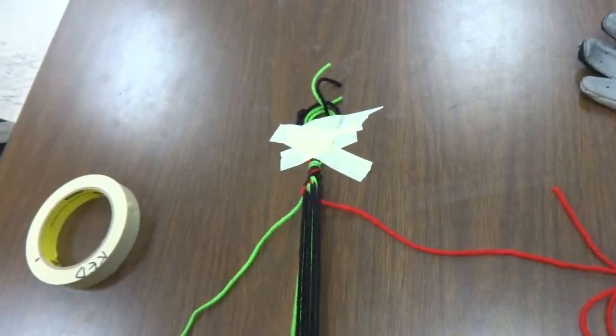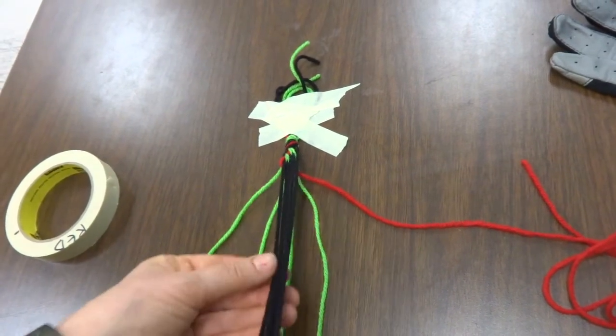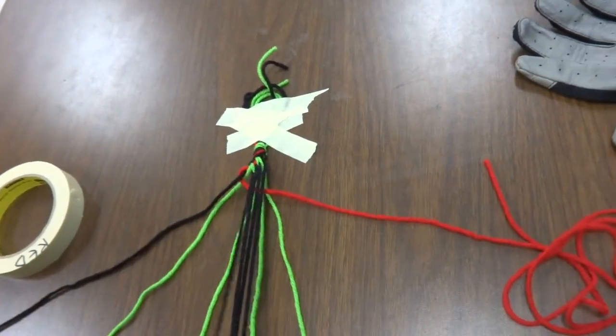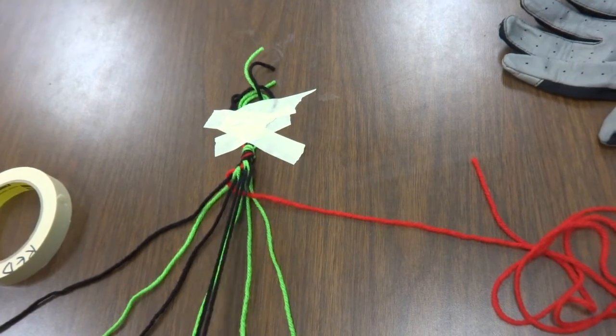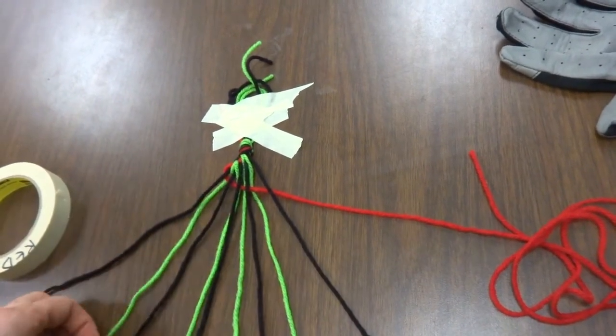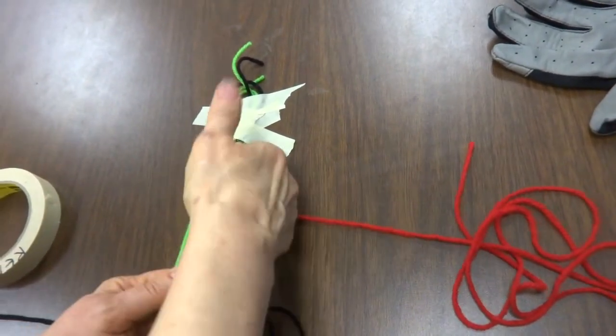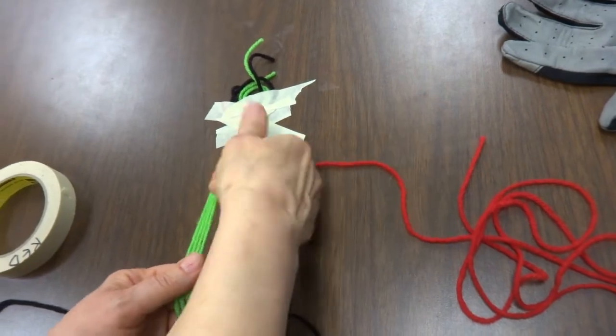The green's on the bottom. I'm going to fan them out in order, no crisscross. Then black goes on the way outside. And the black's on the top, so I'm going to pick up the green. And I push. And I pull. And there's my beautiful black stripe.